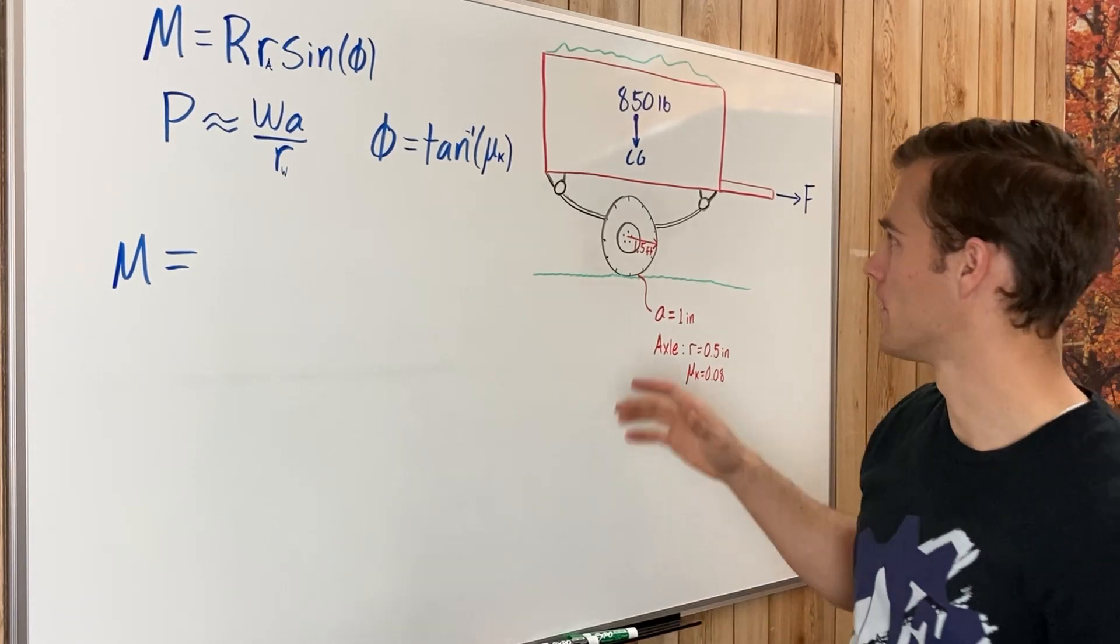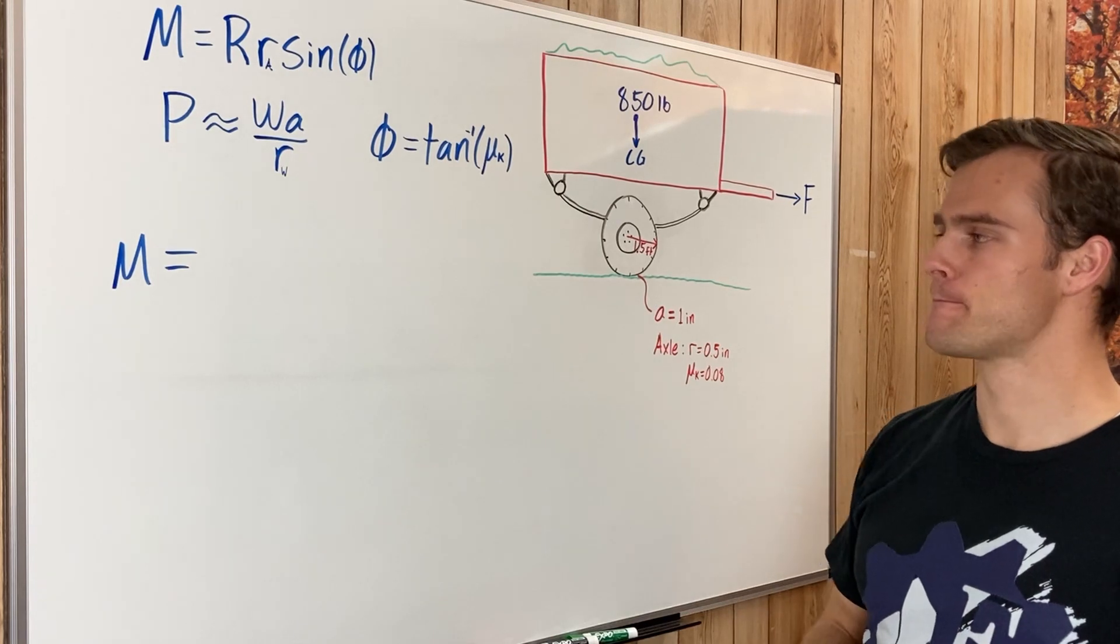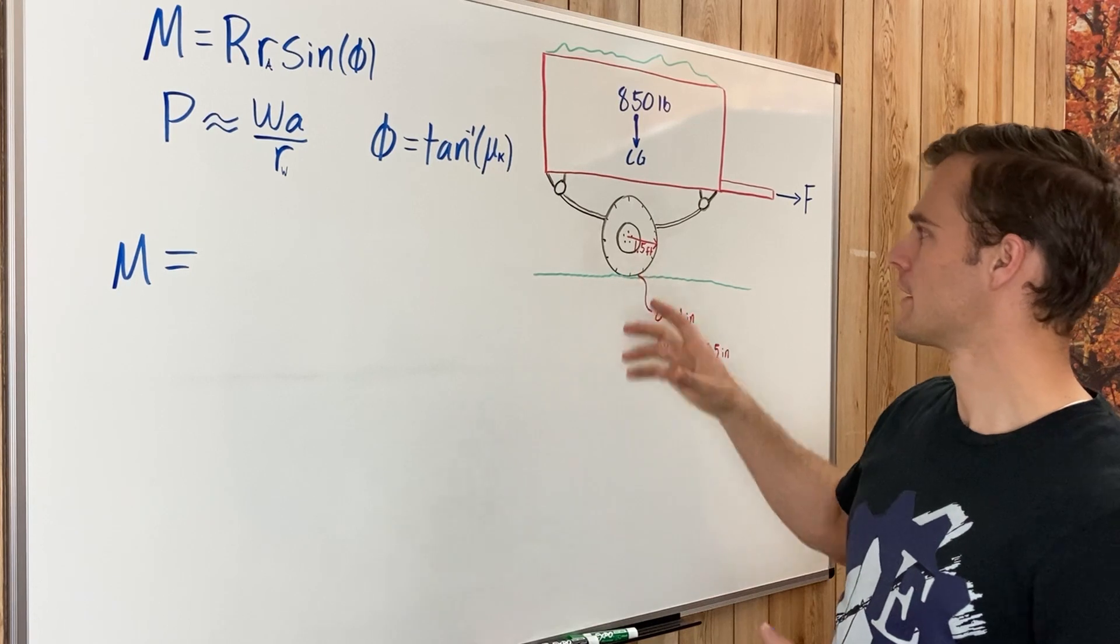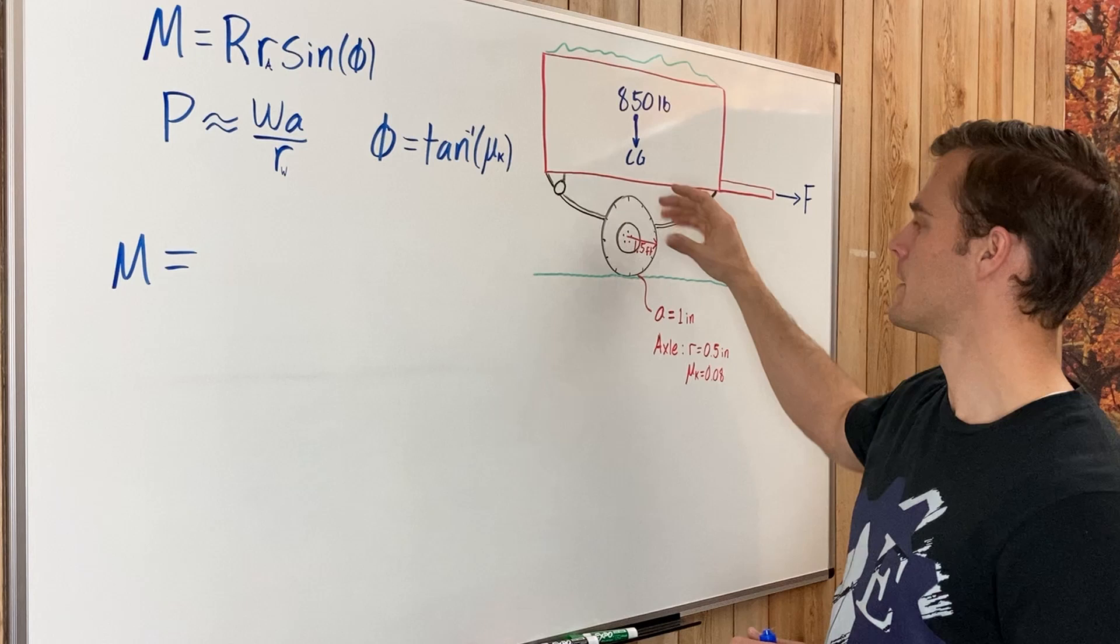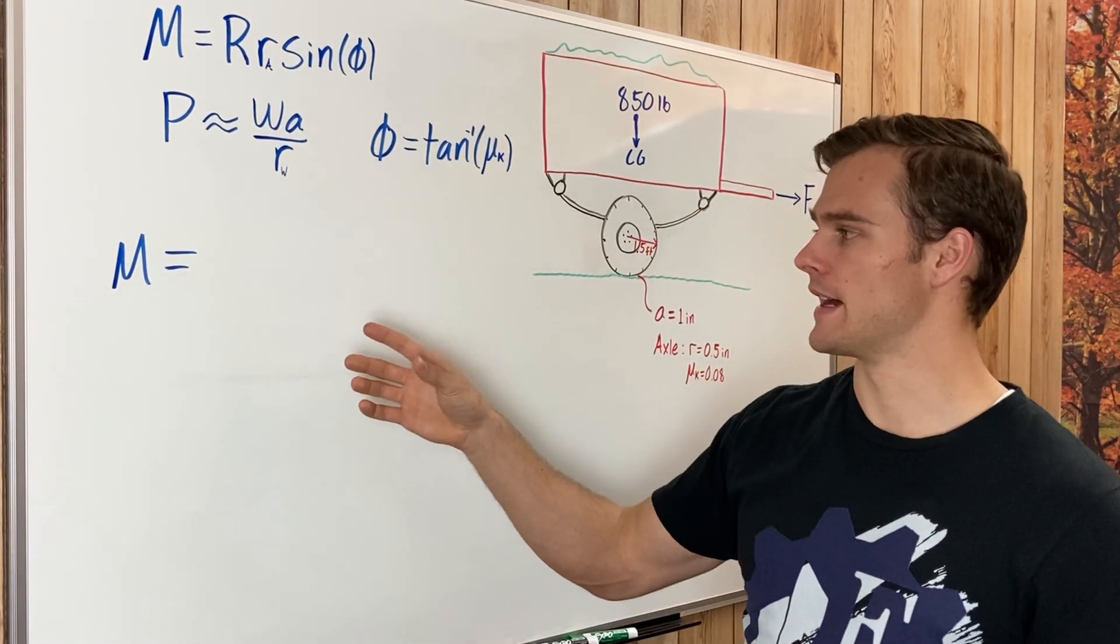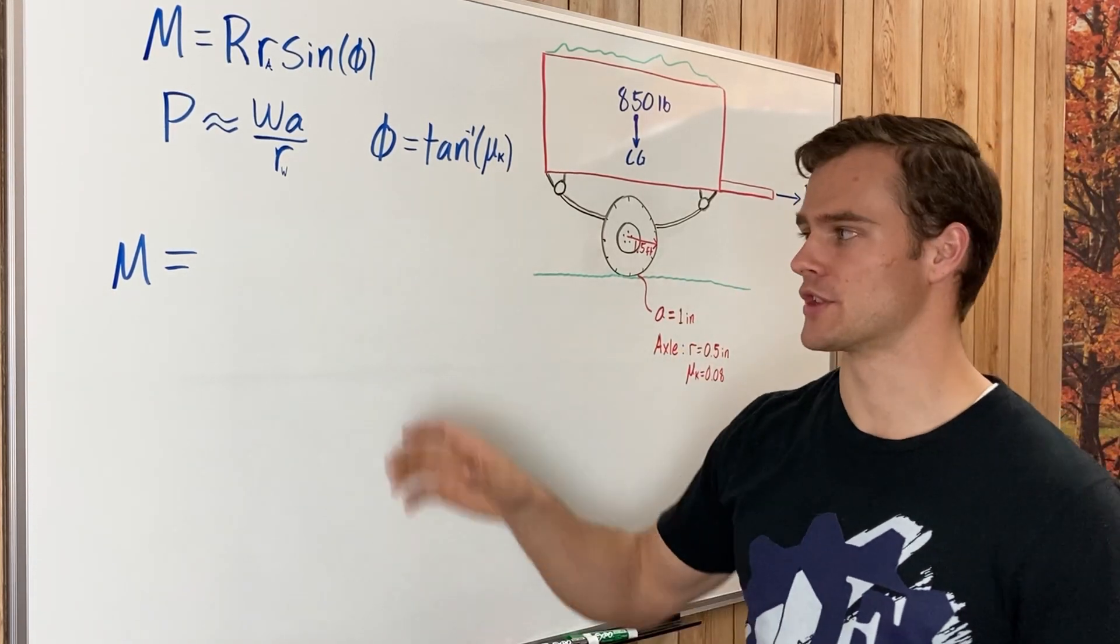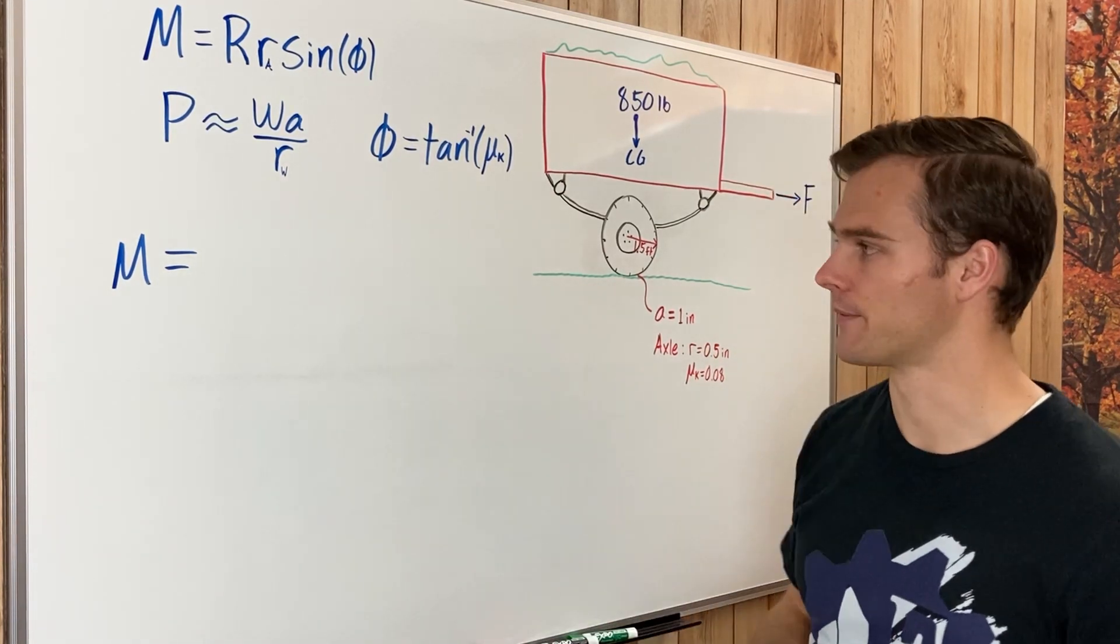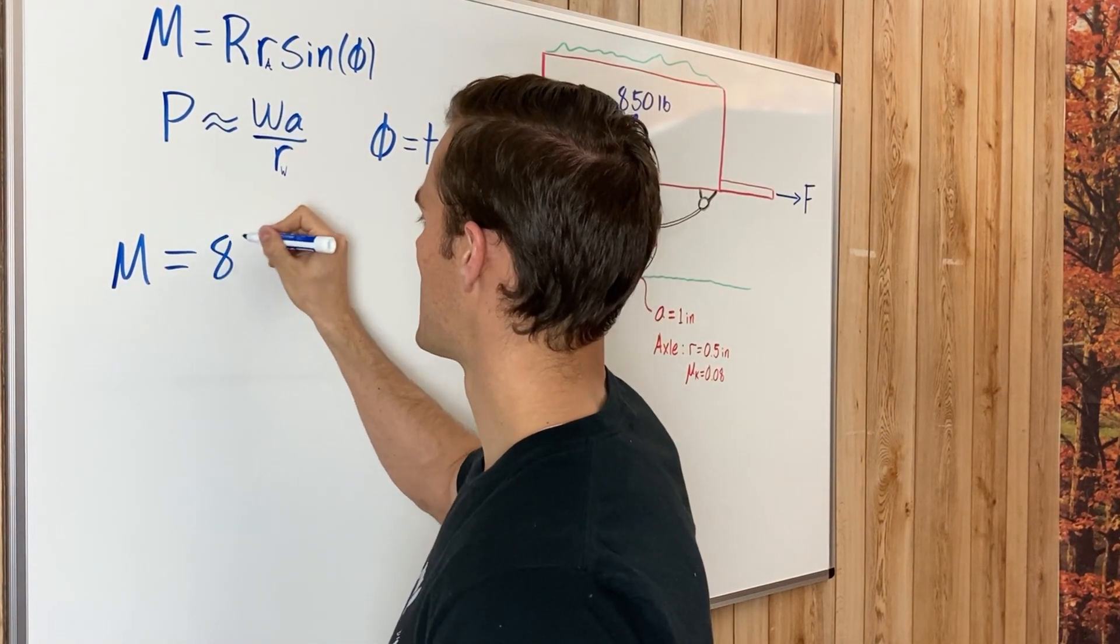One other thing to mention is that we are going to analyze this all together as if it's kind of like one wheel here. The reason why we're doing that is because if we were to analyze it separately with both wheels, we'd need to divide the load between the two tires and then multiply everything by two to get the frictional forces in both wheels. But what that ends up doing is just dividing by two and multiplying by two, so it just cancels out. So big R is 850 pounds.